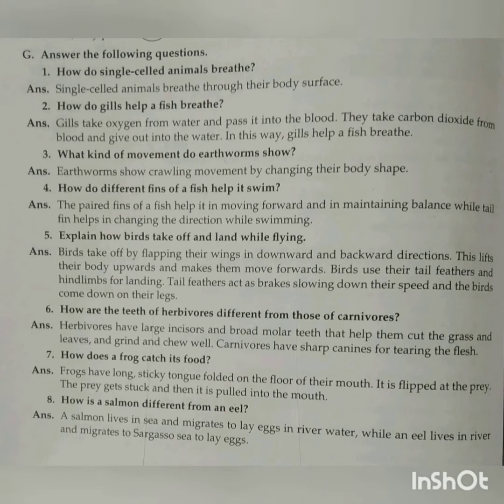their body surface. Question number two: how do gills help a fish to breathe? Answer: gills take oxygen from water and pass it into the blood. They take carbon dioxide from the blood and give it out into the water. In this way gills help a fish to breathe.